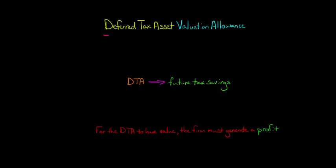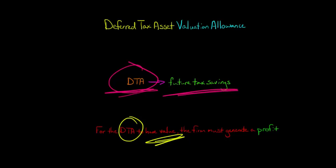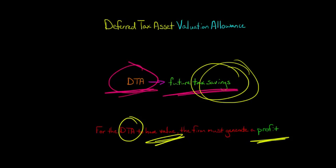In this video, we're going to discuss the Deferred Tax Asset Valuation Allowance. A Deferred Tax Asset has value because it provides future tax savings — our taxes will be lower at some point in the future. However, for the Deferred Tax Asset to have any value at all, the firm must generate a profit. We're not going to have tax savings if we don't have any taxable income.